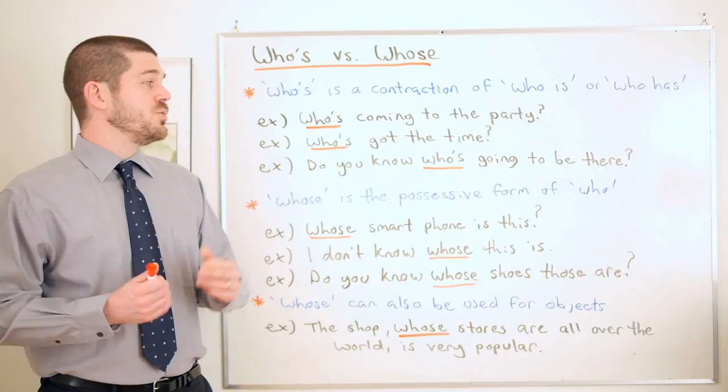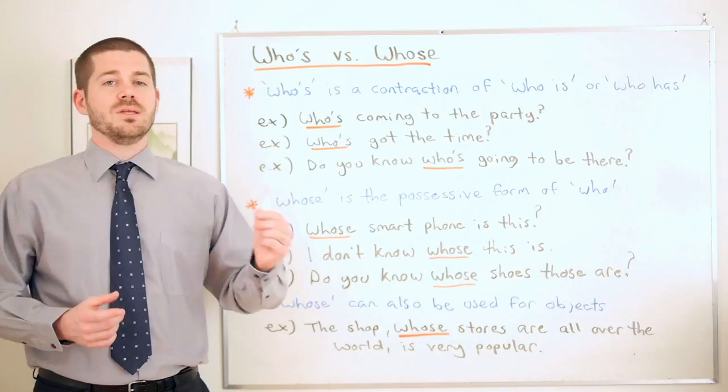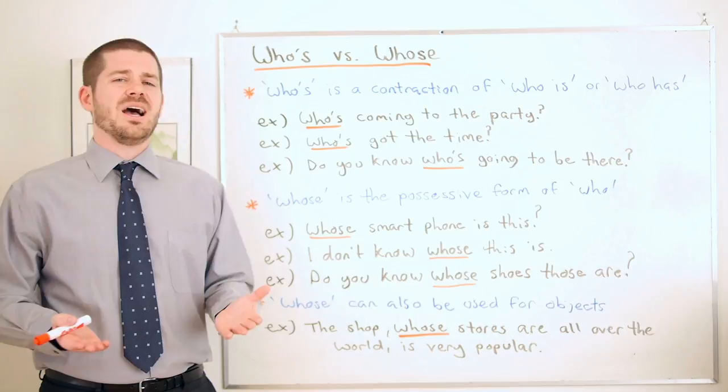And one more example: do you know who's going to be there? Again we can notice it's in the present continuous, the present progressive. So do you know who is going to be there?